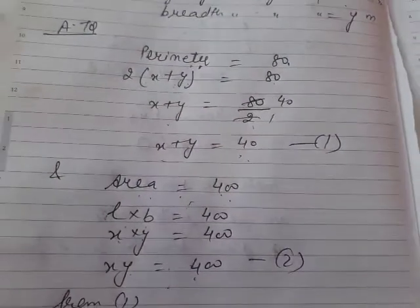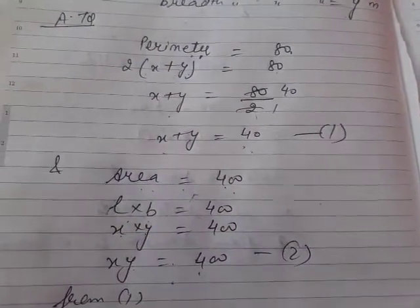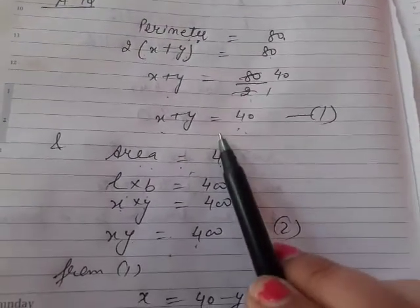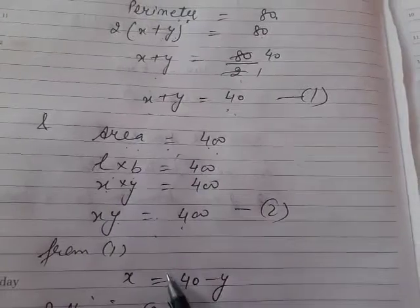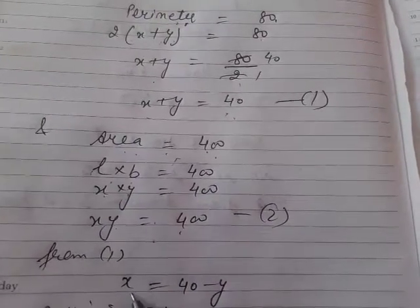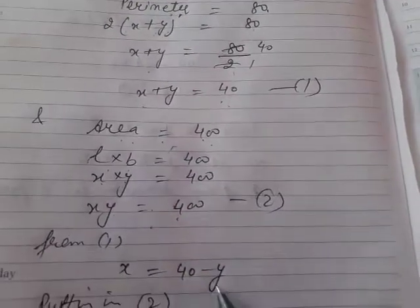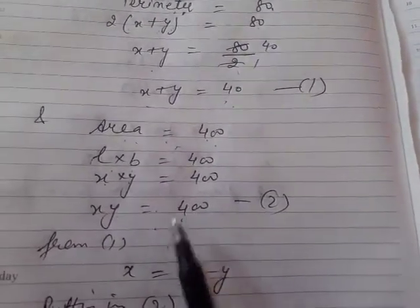Now you have given these two situations. From these two situations you find the variables x and y values. So from the first situation I find x is equal to 40 minus y. Putting it in the second equation.